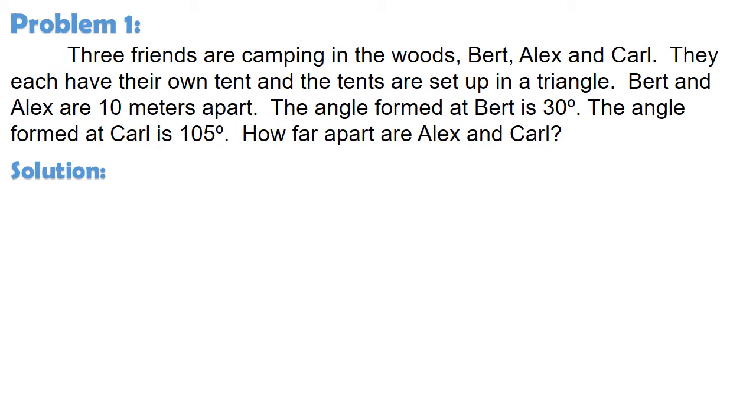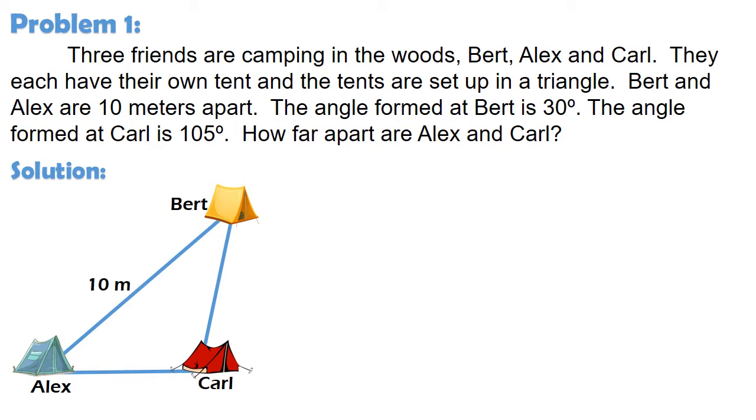For the solution, makakatulong sa atin na gumawa muna ng diagram tungkol sa ating problem. Kaya, himay-himayin natin ang mga impormasyon. Ang pwesto ng tatlong magkakaibigan na sina Bert, Alex, at Carl sa kanya-kanya nilang tent ay pa-triangle. Base sa problem ay mayroon isang obtuse angle kaya naman atin din itong i-consider sa paggawa ng diagram. Ang layo ng tent ni Bert sa tent ni Alex ay 10 meters. Ang pwesto ng tent ni Bert ay nakabuo ng 30 degree angle papunta sa pwesto ni Alex at Carl. Samantalang, nakabuo naman ng 105 degree angle ang pwesto ng tent ni Carl patungo sa pwesto ni Bert at Alex.